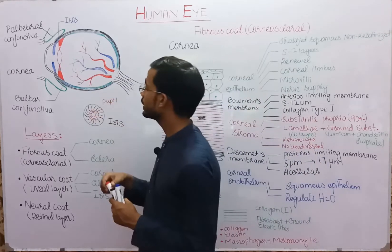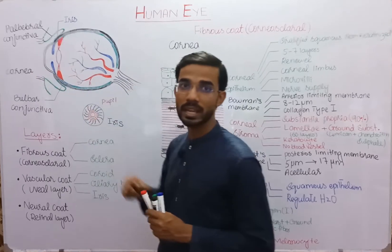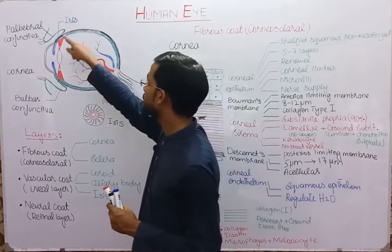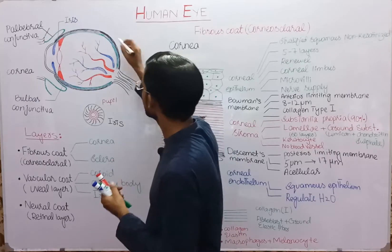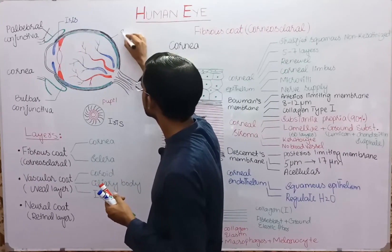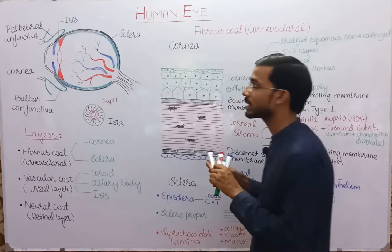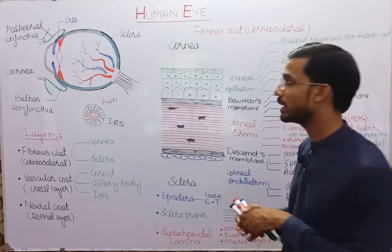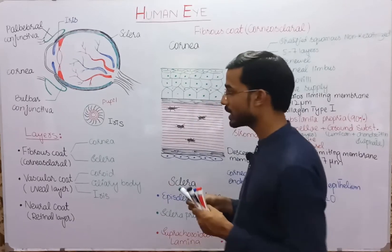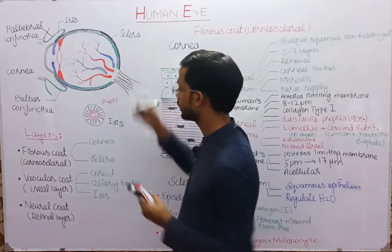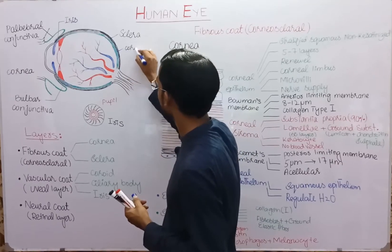In the diagram, the outermost layer at the front of the eye is the cornea, and at the back is the sclera. The next layer inward is the choroid.